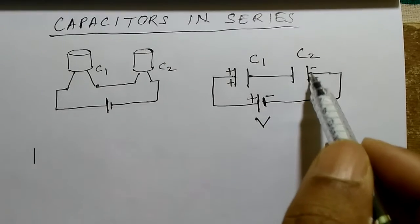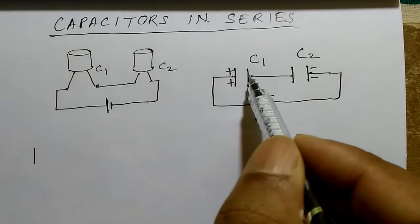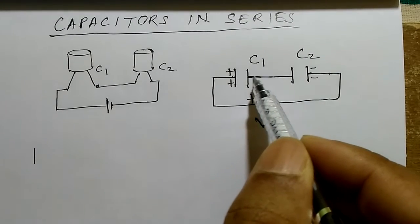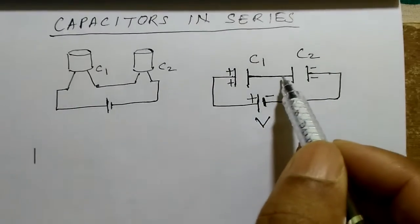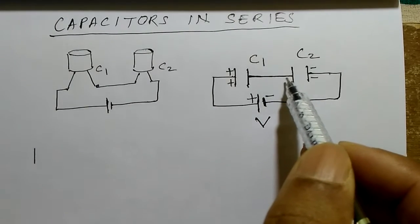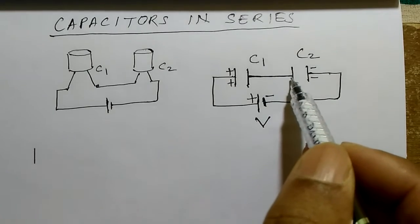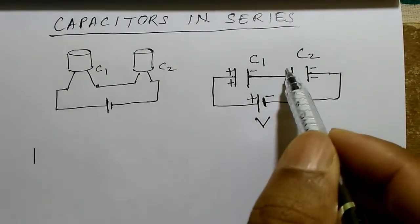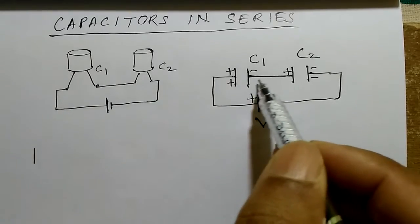Due to this field in the wire, there is a movement of charge. Electrons from this plate will run and accumulate on this plate. Equal positive charge will be created on this plate, and they will keep on moving and accumulating on these plates, making them equal positive and negative.